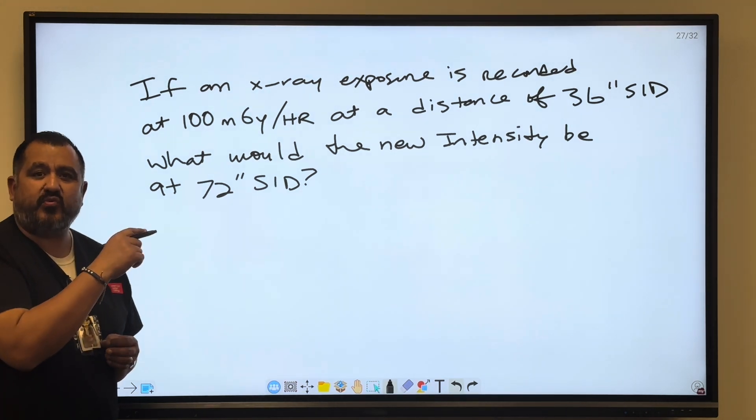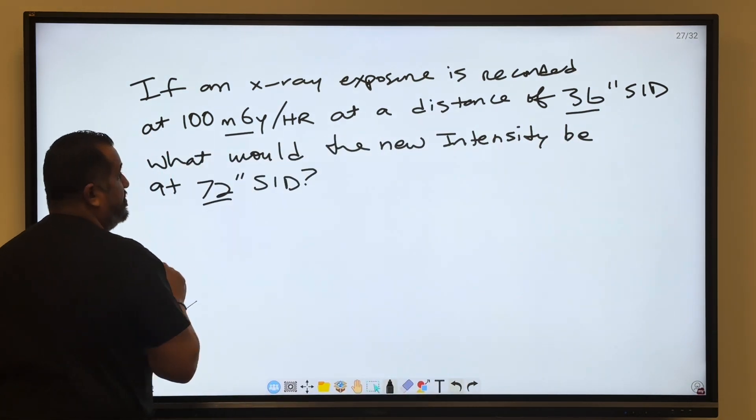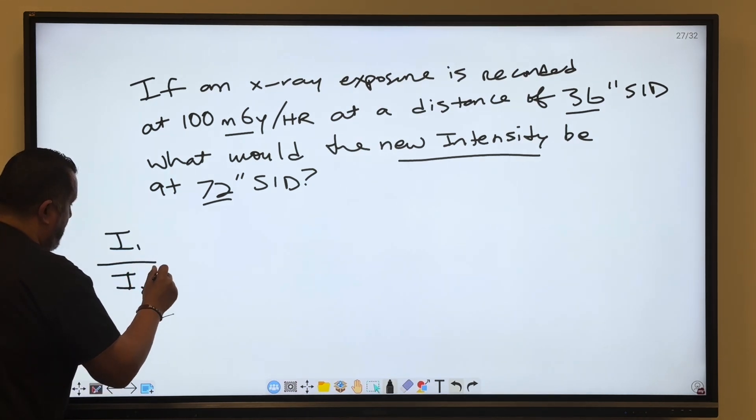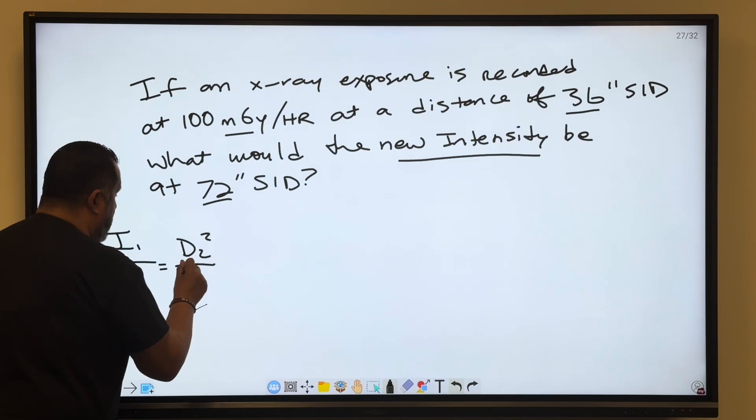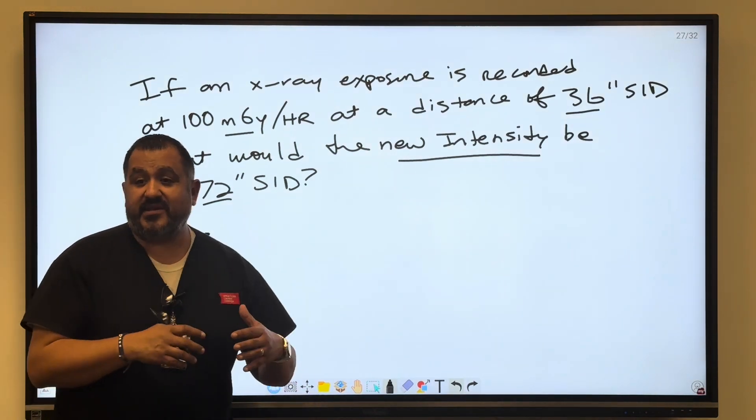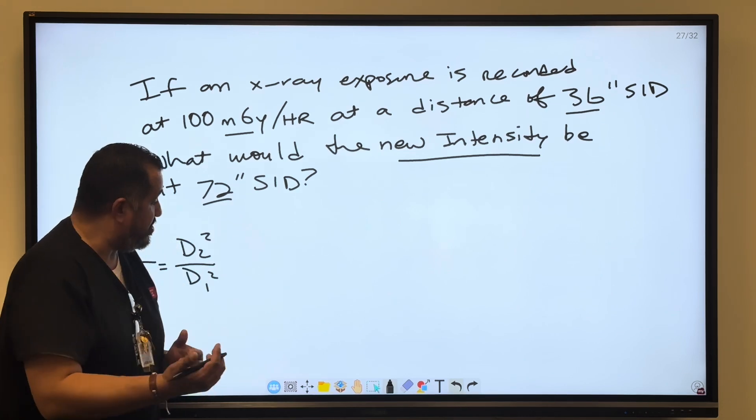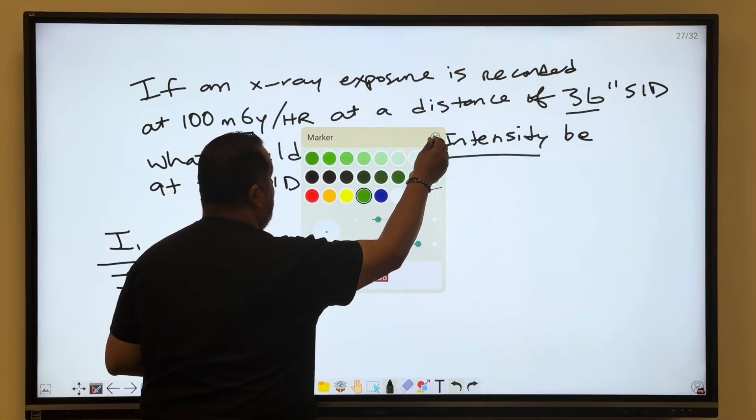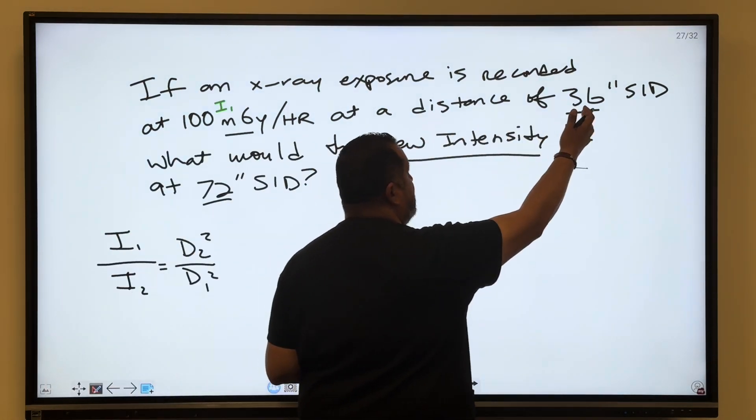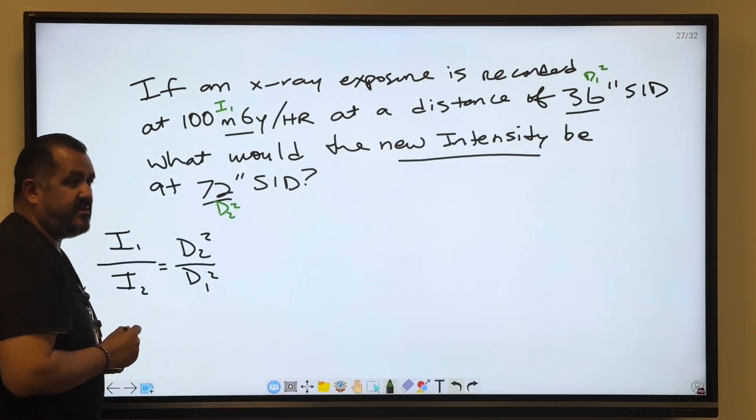Do you see the key terms here that are going to direct us to the inverse square law? We got milligray, we got a change of distance from 36 to 72, and we have intensity, new intensity. So what I would do is I would write the formula out: I1 over I2 equals D2 squared over D1 squared. Write out the formula and then read the question and identify the factors you're going to need. 100 milligray is going to be I1. A distance of 36 inches is going to be D1 squared. 72 inches is D2 squared.